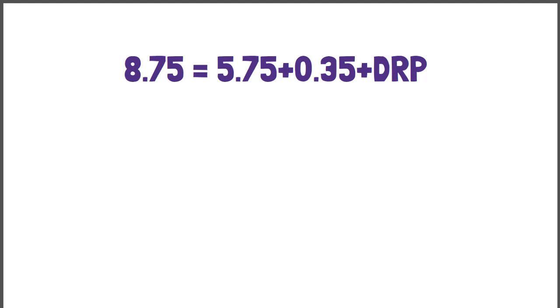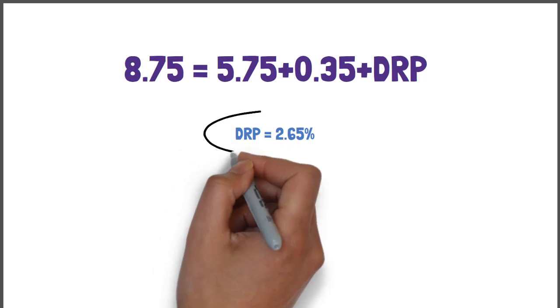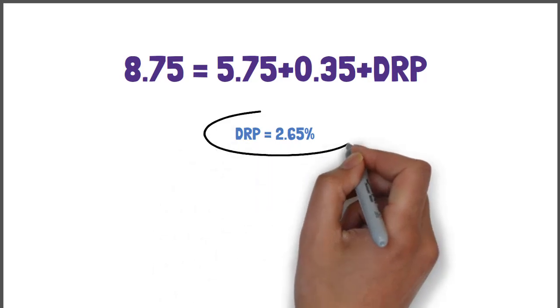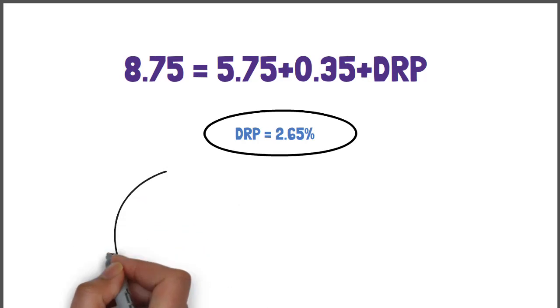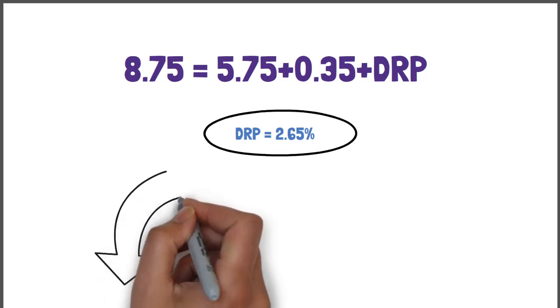So DRP equals 2.65%. Hence, the default risk premium on a 10-year corporate bond is 2.65%.